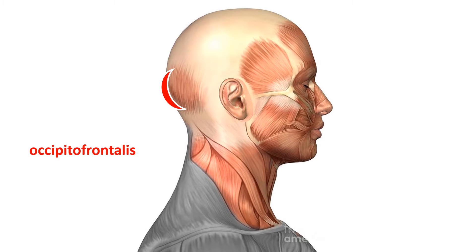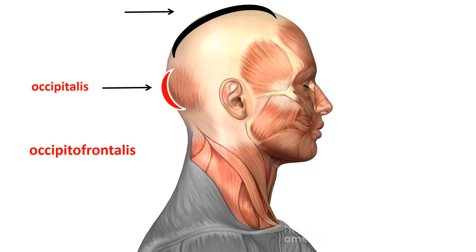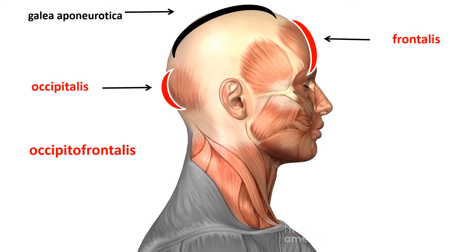The occipital frontalis muscle has a posteriorly fleshy part attached to the external surface of the occipital bone — this part is called the occipitalis. The muscle then forms an aponeurosis, a flat tendon over the skull called the galea aponeurotica. As the muscle comes anteriorly, it inserts into the skin, and this anterior part is called the frontalis part of the occipital frontalis muscle.